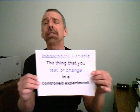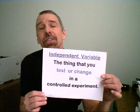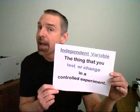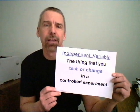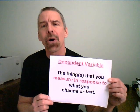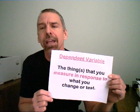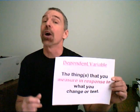The independent variable is the thing you test or change. In every experiment, there's only one. The dependent variable is the response to that thing you changed. Now you know the difference, keep it here.